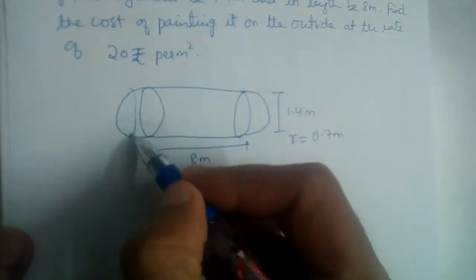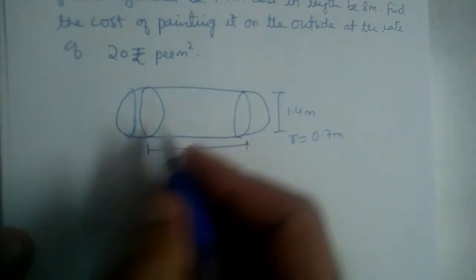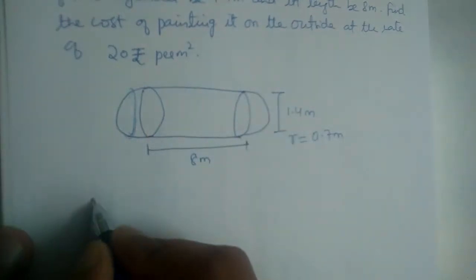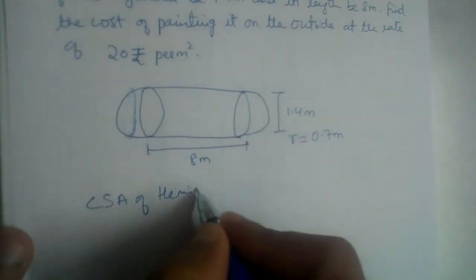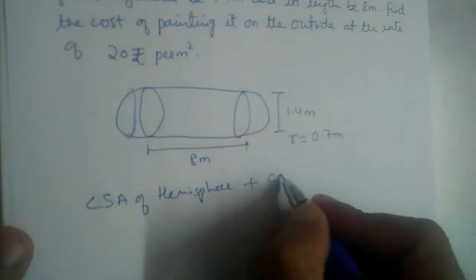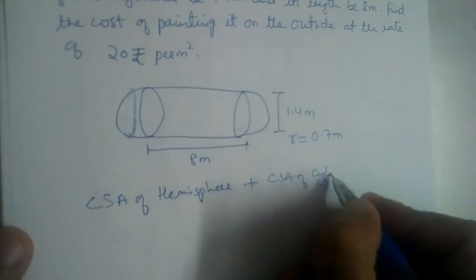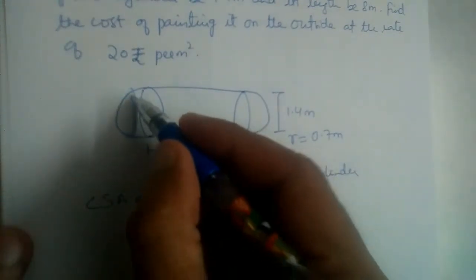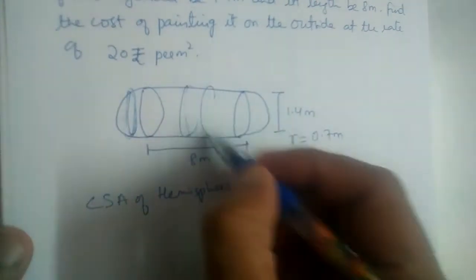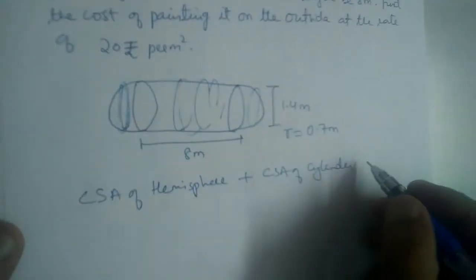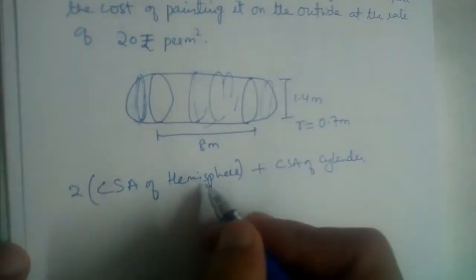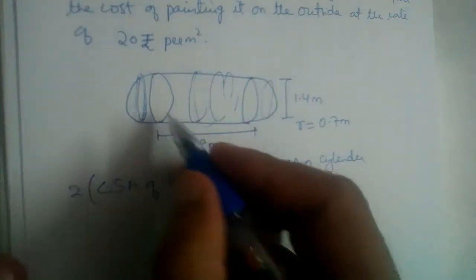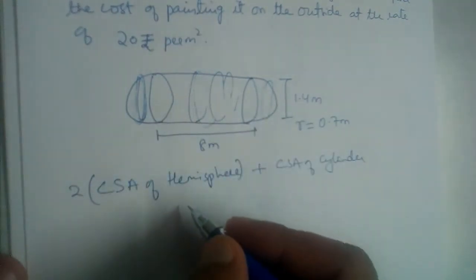So it will be equal to curved surface area of hemisphere plus curved surface area of cylinder. Hemisphere, cylinder and then one more hemisphere. So total 2 into curved surface area of hemisphere, because we have 2 hemispheres.